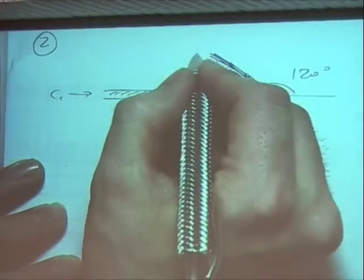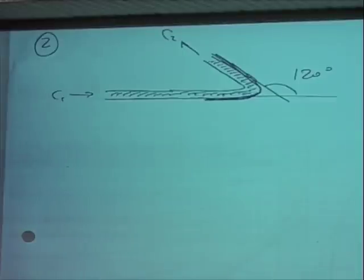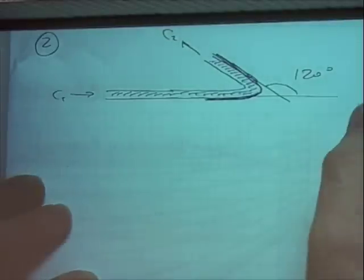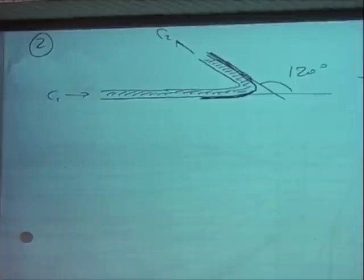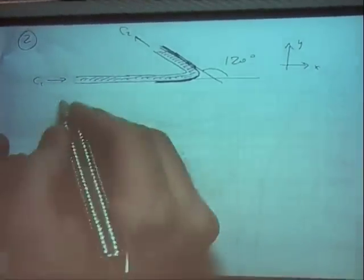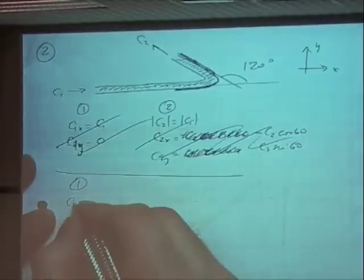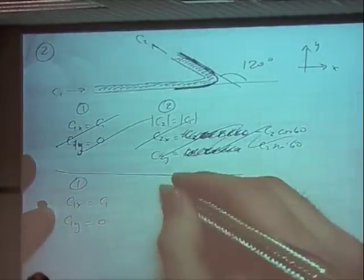Here we've got c1, here we've got c2, and again we'll take positive to be this direction, x and y. So again we make a little table. One: c1x is c1, c1y is 0.